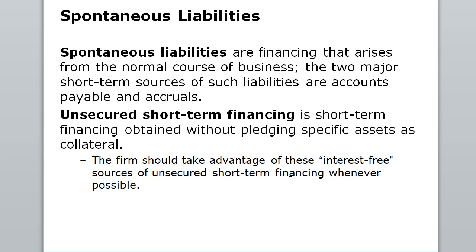Let's start off with spontaneous liabilities. What are spontaneous liabilities? These are basically financing that's going to occur during the normal course of business within a year. The two major short-term sources of such liabilities would be accounts payable and accruals. Unsecured short-term financing is obtained without pledging any specific assets, collateral, or terms — it's an interest-free, unsecured source of financing.